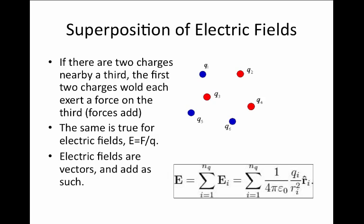Just as the net force on a charge Q is equal to the sum of all the forces from nearby objects around it, we can compute the net electric field from a collection of charges — because these represent the potential to exert a net force if we were to place a charge Q somewhere. Because forces add as vectors, it is also the case that electric fields will add as vectors.